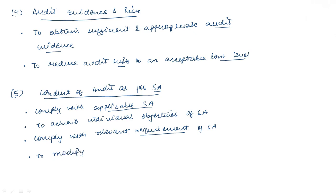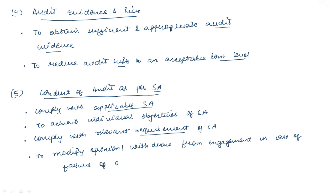You are also required to modify your opinion, or you can say withdraw from the engagement, in case of failure of the objective. For example, if your objective is to give a proper, clear picture of the accounts but the accounts are destroyed and you cannot give an opinion, in that situation you are required to withdraw your opinion or modify the opinion altogether.